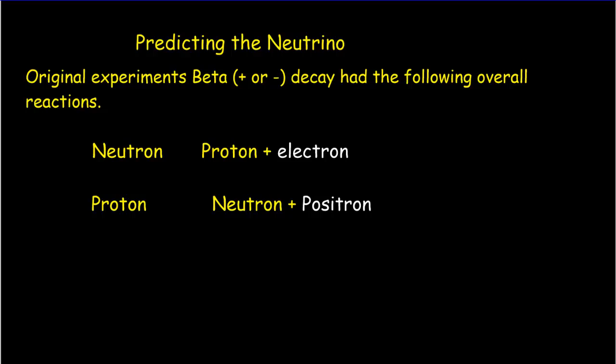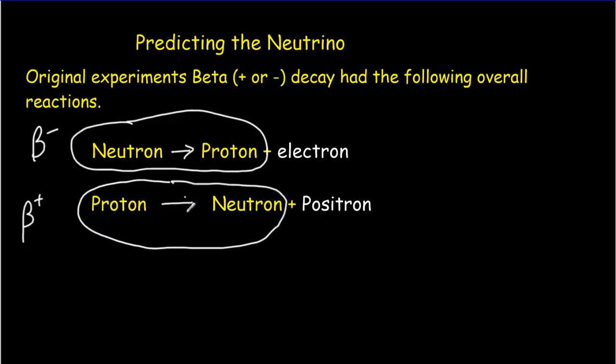There was beta minus decay in which a neutron inside the nucleus would change into a proton. And then there was the positron decay, which was the opposite process, in which a proton would change into a neutron inside the nucleus. In the regular beta decay, it's an electron or beta particle that's emitted. And in the positron decay, it's a positron that's emitted.